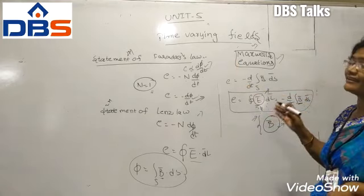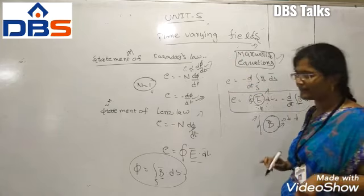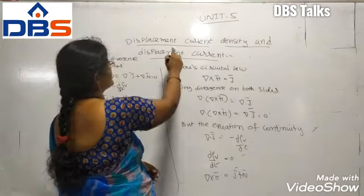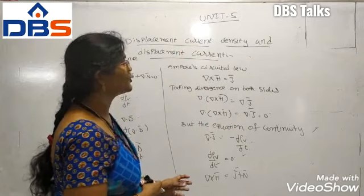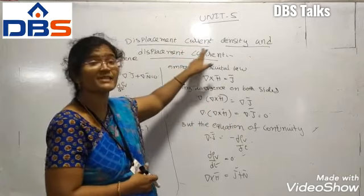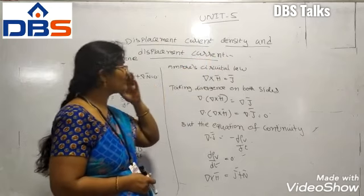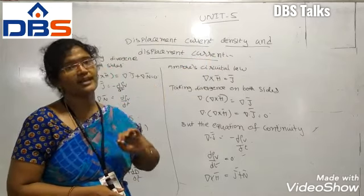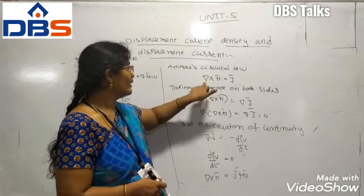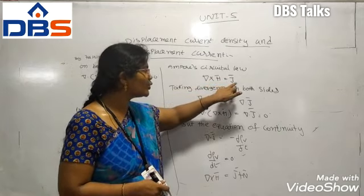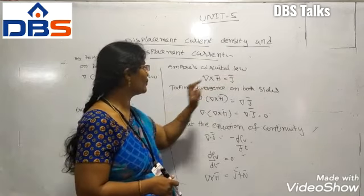Next you can see the current density in time varying fields. After the statements of Faraday's law and Lenz's law, you need to know about displacement current density and displacement current. First of all, according to Ampere's circuital law in stationary electromagnetic fields, you can write: curl of H-bar equals J-bar.